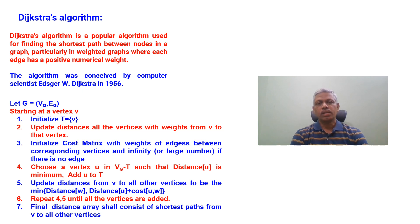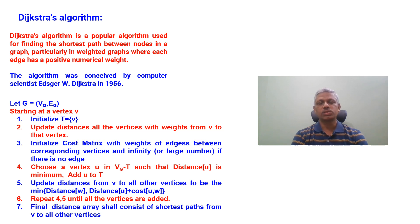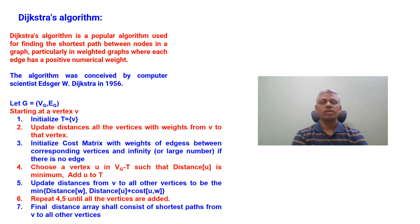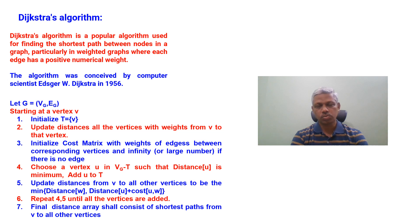The algorithm focuses on identifying the shortest paths from a given vertex to all other vertices. The input is a graph with weights, and the output is the set of all shortest paths from the given starting vertex to all other vertices.